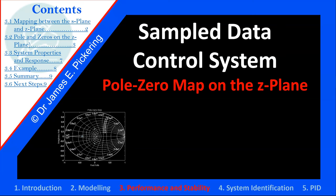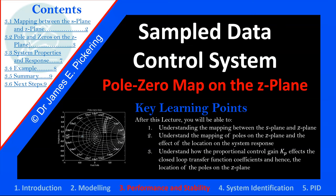After this lecture, you should be able to understand the following: the mapping between the S and Z-plane, the mapping of poles on the Z-plane and the effect of the location of these poles on the system response, and how the proportional control gain, in a closed loop control system, affects the closed loop transfer function coefficients and hence the location of the poles on the Z-plane.